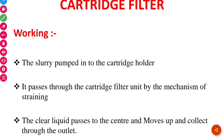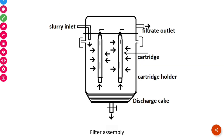Now moving on to the working of a cartridge filter. Slurry is pumped into the cartridge holder through the slurry inlet. It passes through the cartridge filter unit by the mechanism of straining — surface filtration is the mechanism used here. The liquid present in the slurry passes through the cartridge filter unit and is collected through the filtrate outlet. This is the working procedure of a cartridge filter unit.